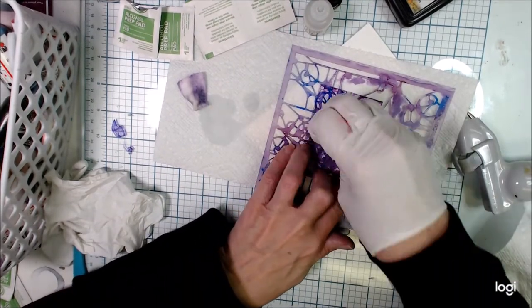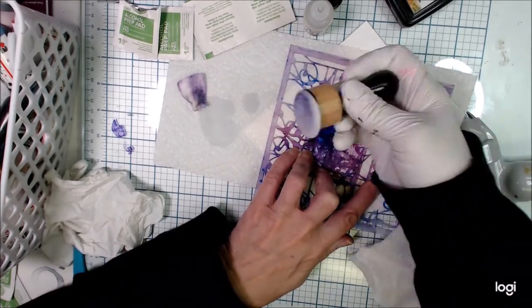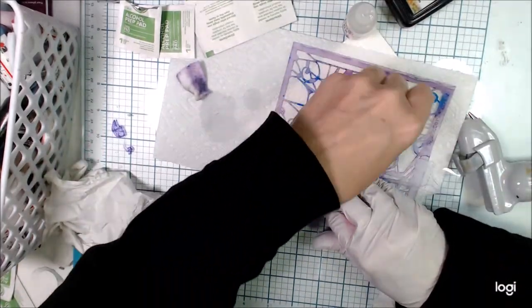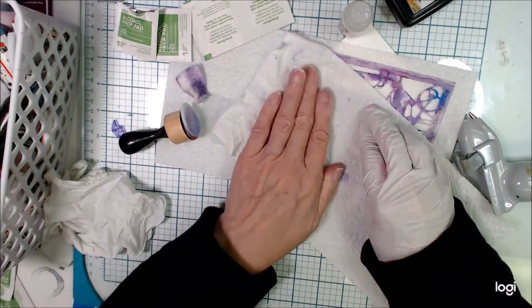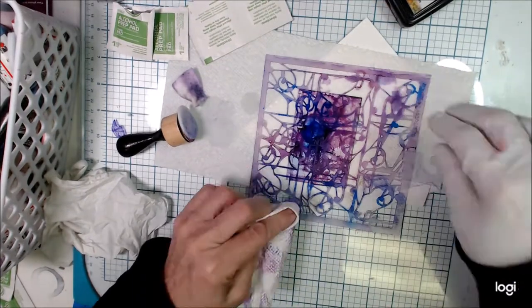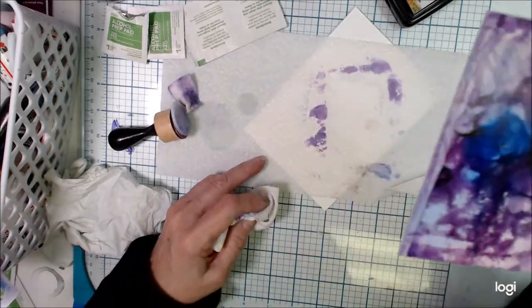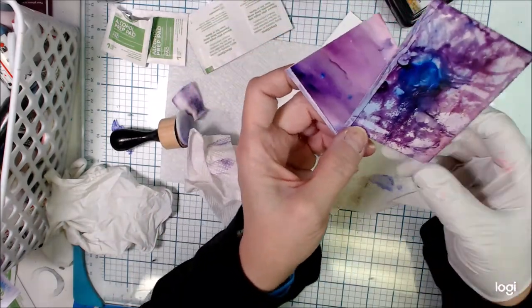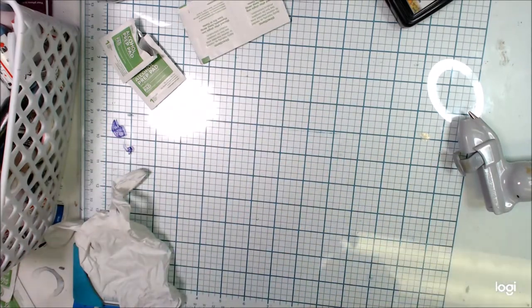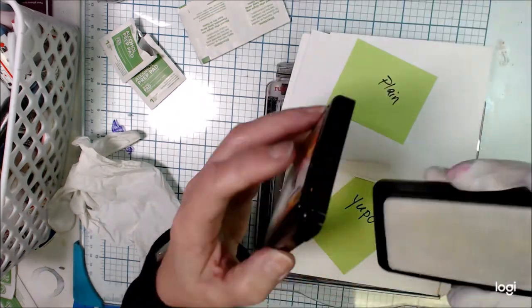Now I'm using an alcohol lift ink and I'm putting that down with one of those applicators, one of those felt applicators and rubbing it through and lifting it with just a kitchen towel. You can see that I can get the design from that stencil with a little bit of effort. So that's one thing that you can do with stencils and alcohol and Yupo.